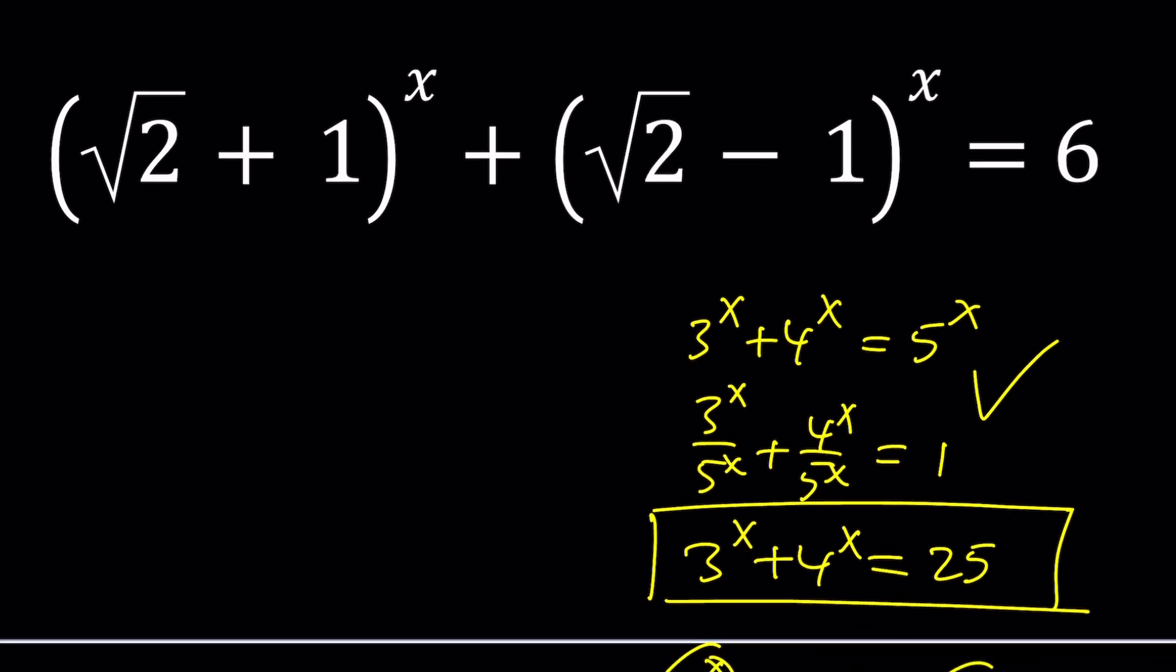For example, if x equals 1, is that going to be a solution? Let's test it out. Square root of 2 plus 1 to the power of 1 plus root 2 minus 1 to the power of 1 equals 6? I don't think so. Because that's just 2 root 2. And as you know, 2 root 2 does not equal 6 because 8 does not equal 36. They're far apart, right? So what do you do, though?